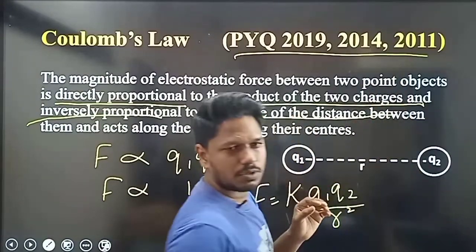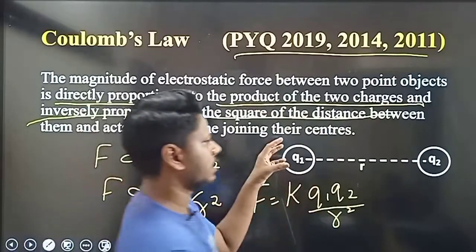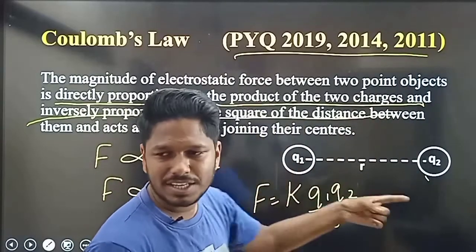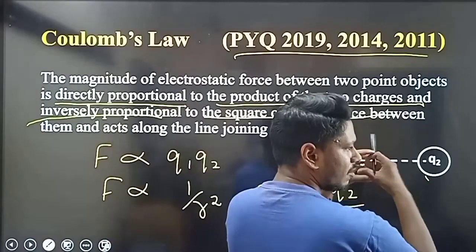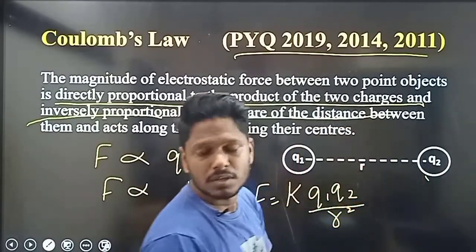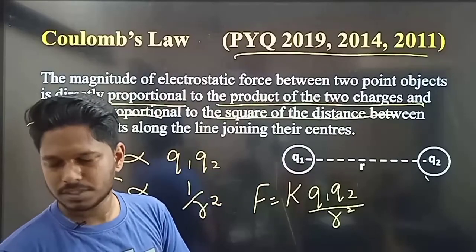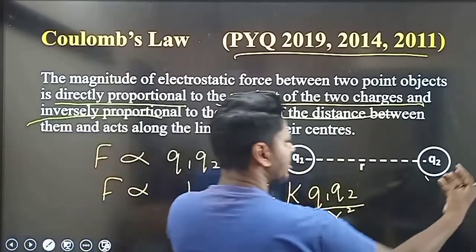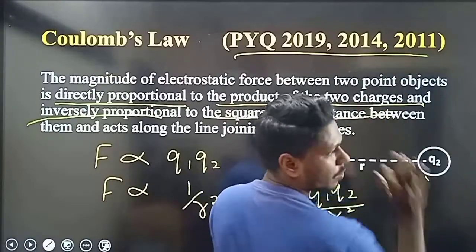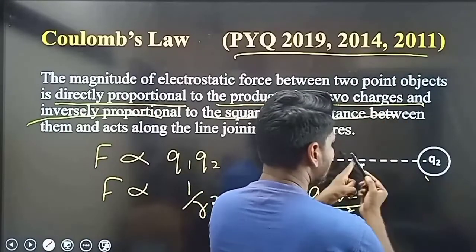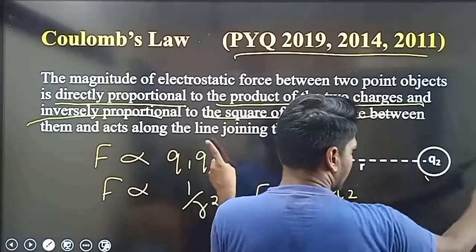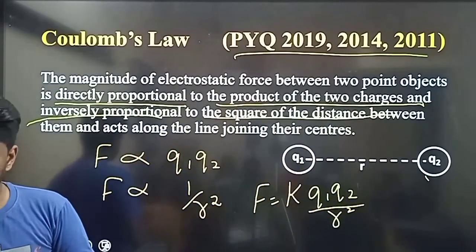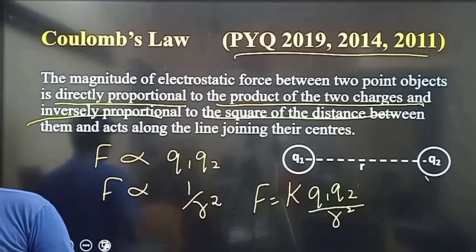If you look at the charge, the force goes along the line joining them. If you don't have a central force, it could go in different directions. But this is a central force — the force always acts along this line.